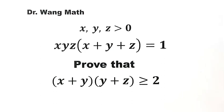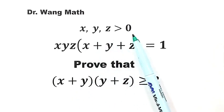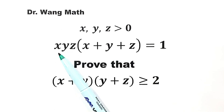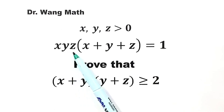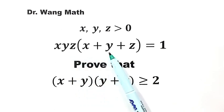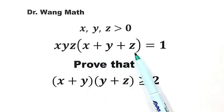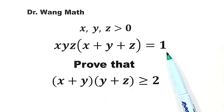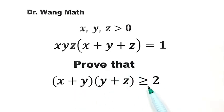In this video, we will solve a question from the Russian Maths Olympiad. x, y, and z are bigger than zero. Given the equation xyz times quantity x plus y plus z equals 1, prove that x plus y times y plus z is bigger than or equal to 2.